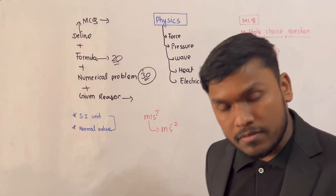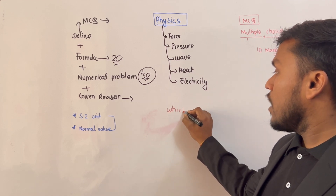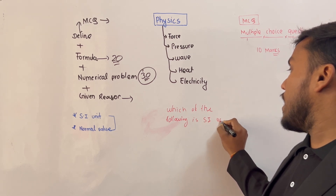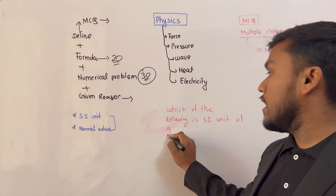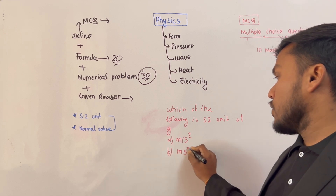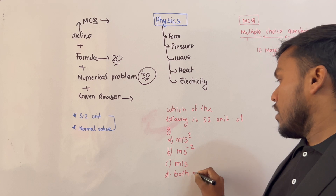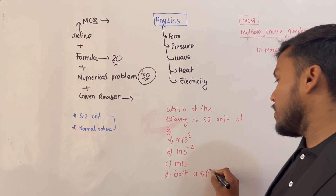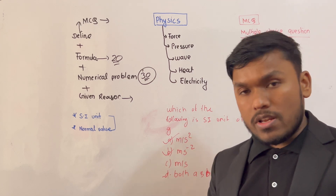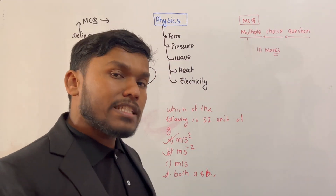For example, 'which of the following is the SI unit of a solution?' — this is the type of MCQ we practice. After finding the right answer, we move to the next chapter. You have to ask what to do with MCQs and learn the tips and tricks for each chapter.